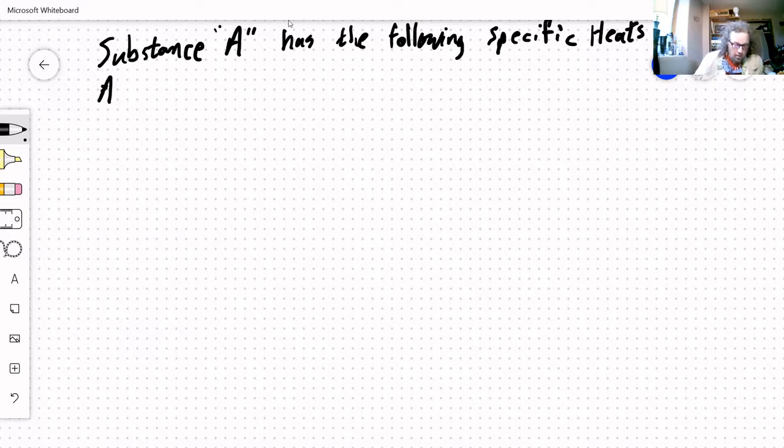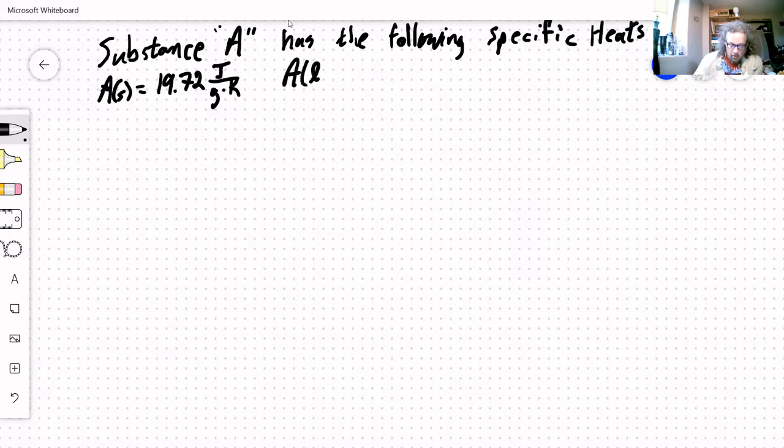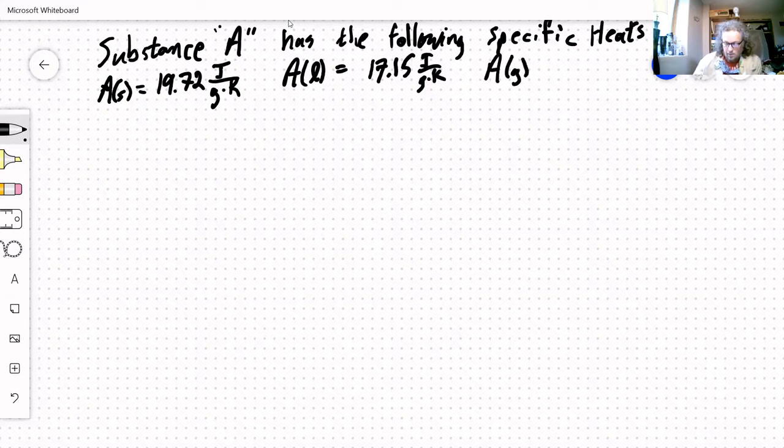So for a solid, let's say it's 19.72 joules per gram Kelvin. For a liquid, let's say it's 17.15 joules per gram Kelvin. And for a gas, let's say that it's 9.783 joules per gram Kelvin. So those are my heat capacities for each of those states of matter.